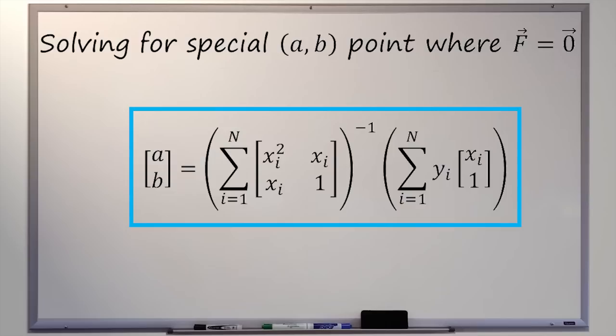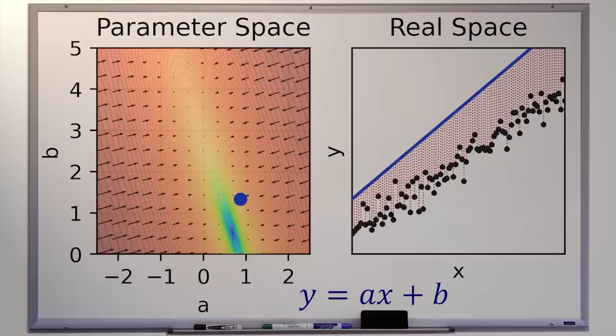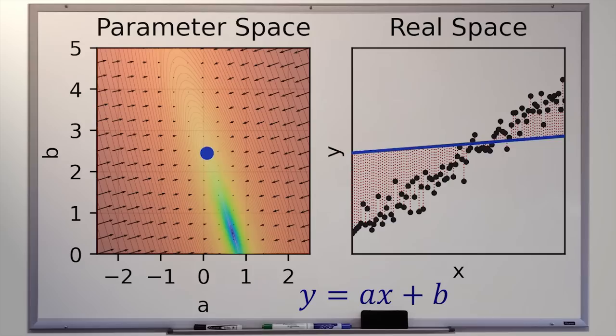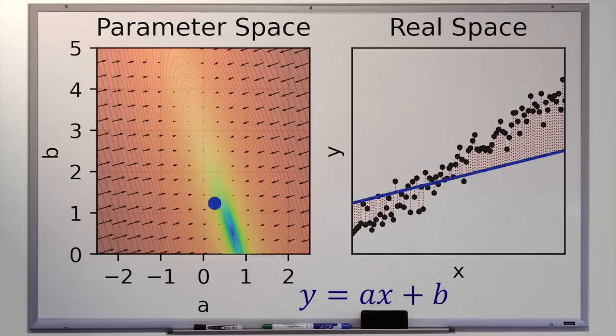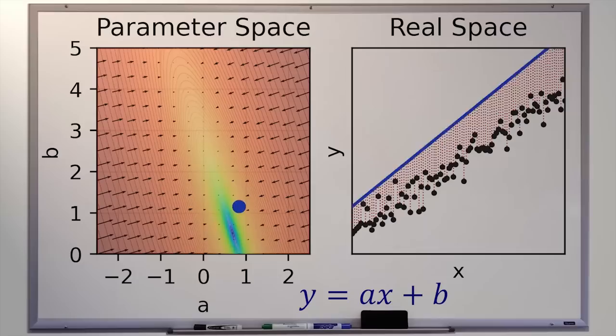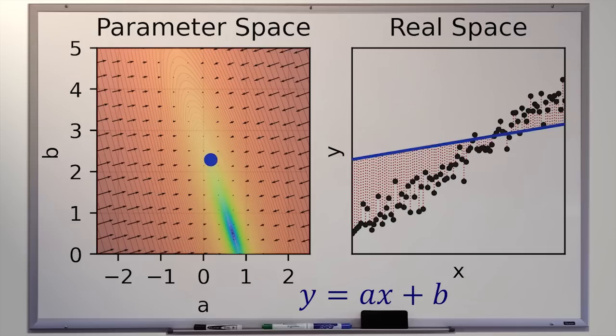Notice that the derivation of this comes from thinking about an error landscape, thinking about an error force, and doing physics in our abstract AB space. We can reduce it to an algorithm, but in order to get there we had to go on this conceptual journey — and it's the conceptual journey that really matters. You don't have to remember the equation on screen right now. But having seen the process in this video, I hope you'll remember the visuals, the thoughts, the reasoning, and the abstraction — because that's really what matters. And that is the beauty of linear regression.